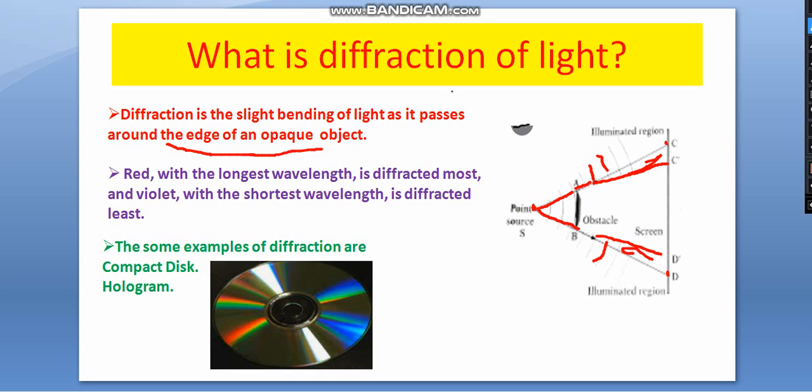Now which color diffracts most? That is red, having longest wavelength and diffracted most. That's why the brake light of any automobile is red. Wavelength, after that diffraction is also responsible. And violet color with shortest wavelength, all of you know, is diffracted least.